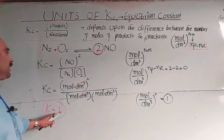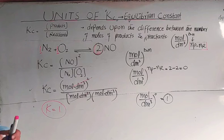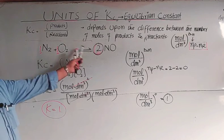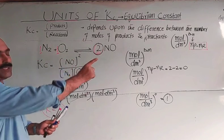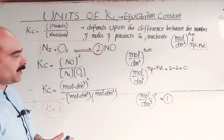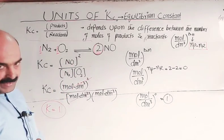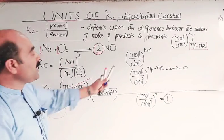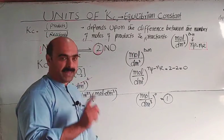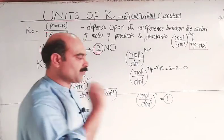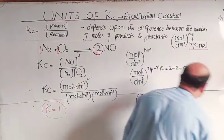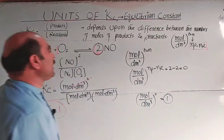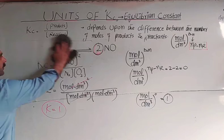When the number of moles of products and reactants are equal, in general the units cancel out. Students, you can now calculate the unit yourself using this trick for the next example.